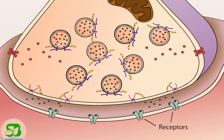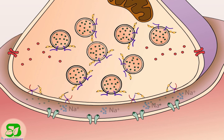For example, the receptor for acetylcholine is permeable to sodium. After binding to acetylcholine, the channel opens and sodium ions enter the postsynaptic cell, thereby generating an excitatory postsynaptic response.